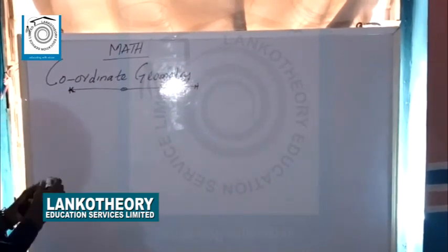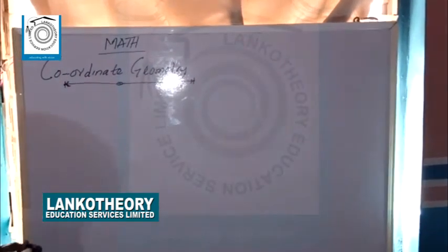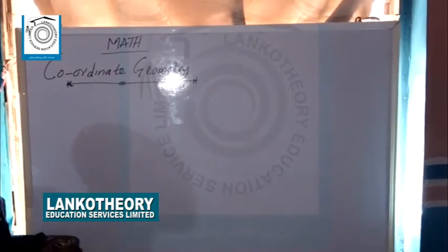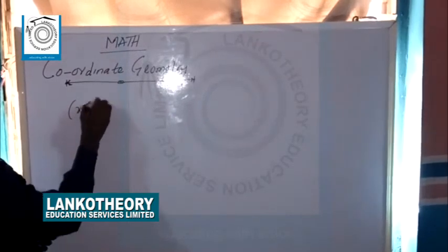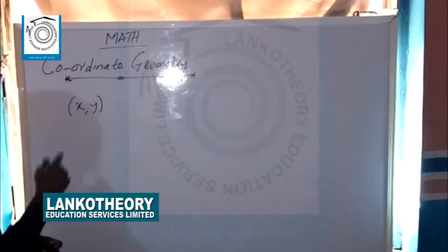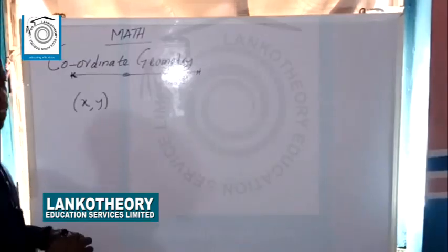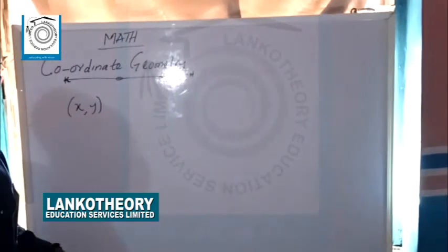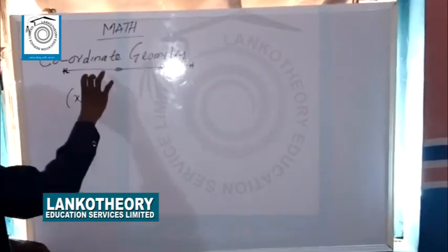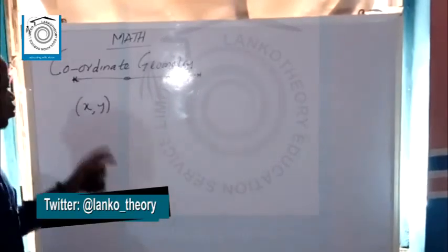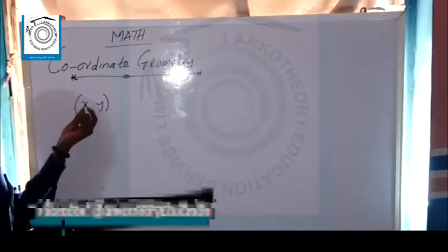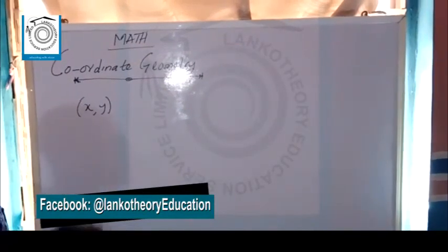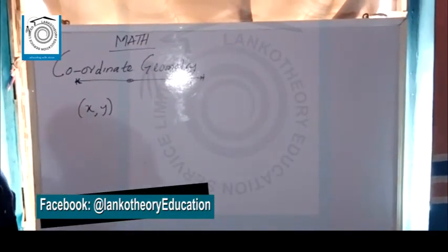Coordinate Geometry is used to study the properties of a coordinate. The coordinate is always represented in a plane form as X, Y — where X we call the abscissa and Y we call the ordinate. So the combination of X and Y we call it coordinates, where X represents the abscissa and Y is the ordinate.